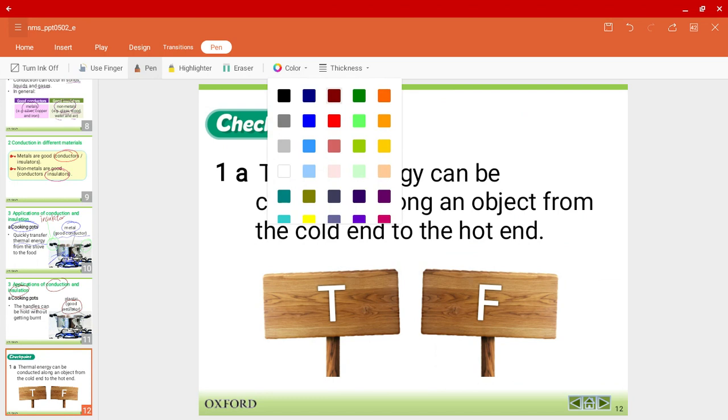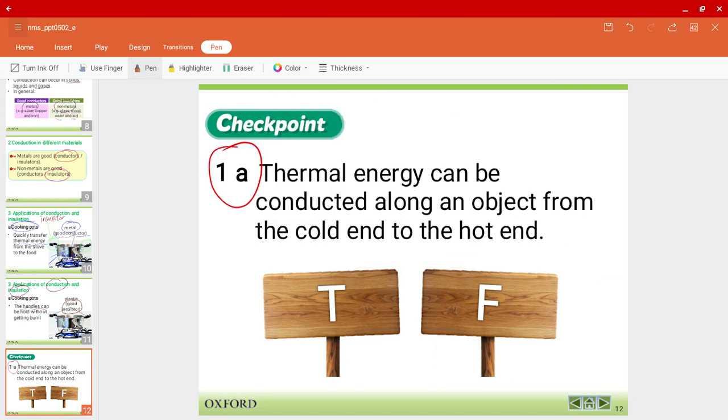Let's do checkpoint questions. Question 1a: Thermal energy can be conducted along an object from the cold end to the hot end. Is this correct? No, it's not. It's false. It should be the opposite. It should be from the hot end to the cold end.